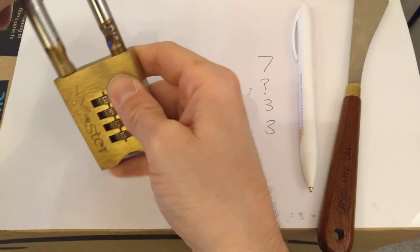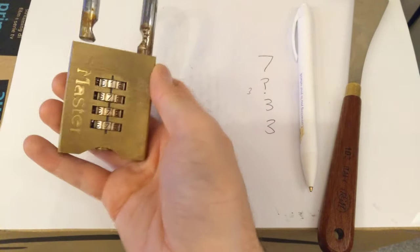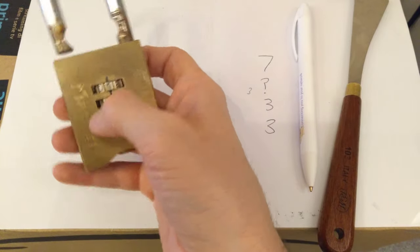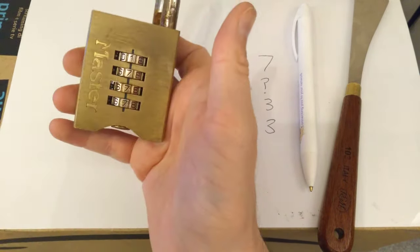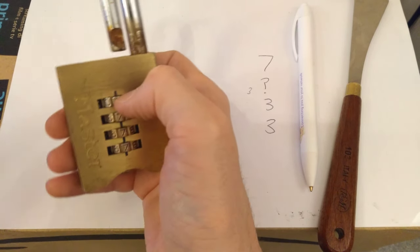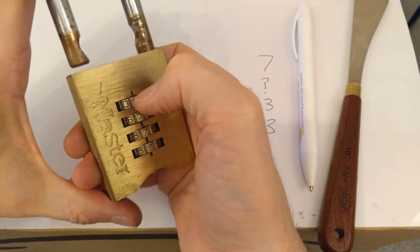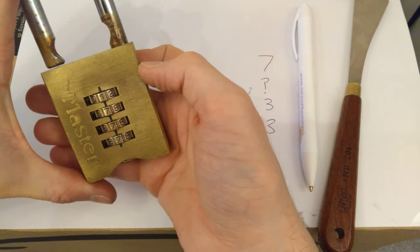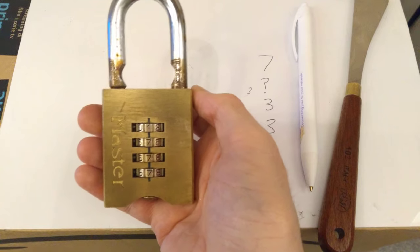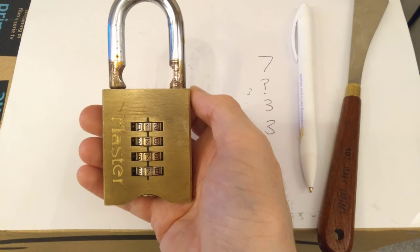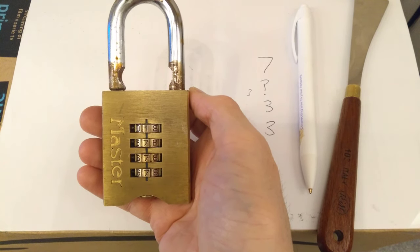And there we go. We have unlocked that without knowing the code. Now we do know the code, we can lock it up, and nobody's the wiser. Or you can change the code. See the link in the video description on how to change the code on one of these locks. Hopefully this video has been helpful to you. If it has, it would be really helpful to me if you wouldn't mind to subscribe to my YouTube channel. Thank you very much.